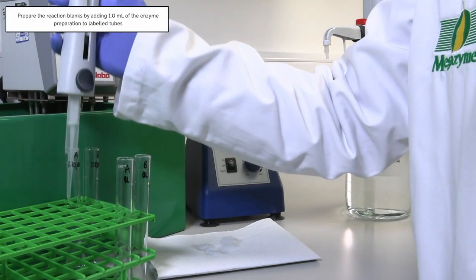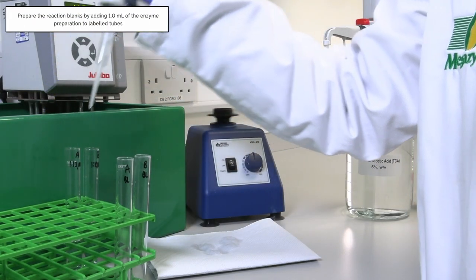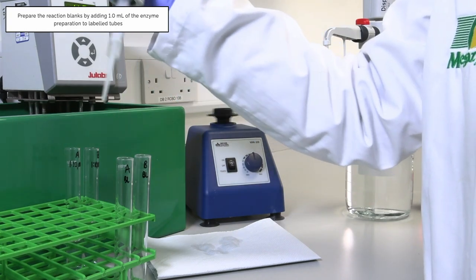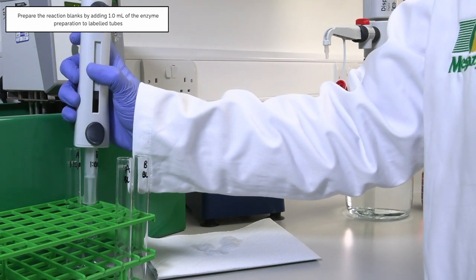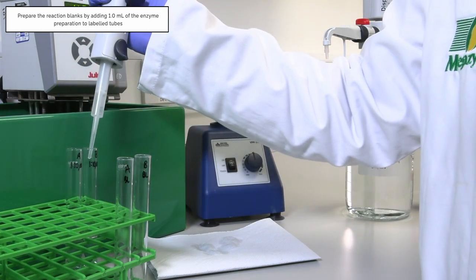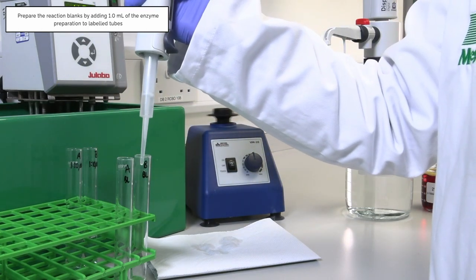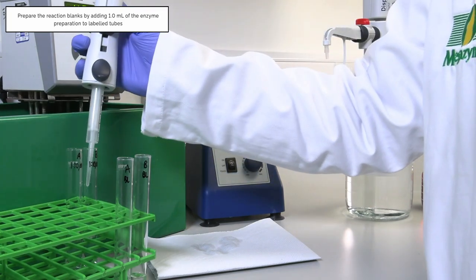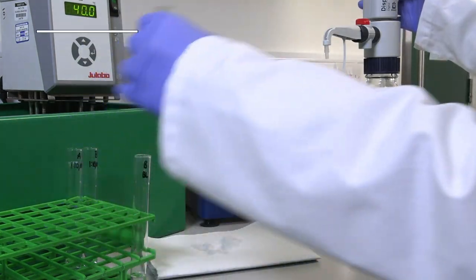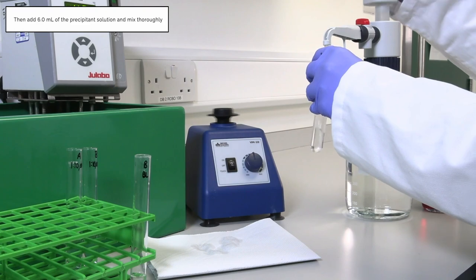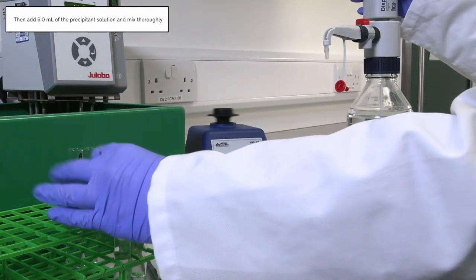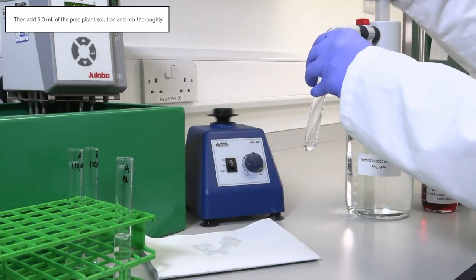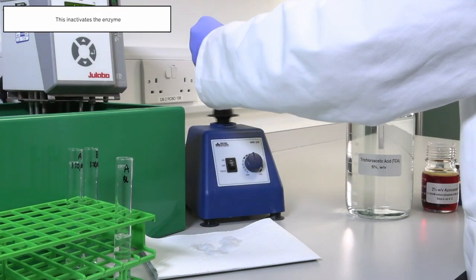Prepare the reaction blanks by adding 1 ml of the enzyme preparation to labeled tubes. Then add 6 ml of the precipitant solution and mix thoroughly. This inactivates the enzyme.